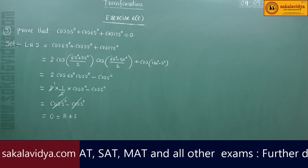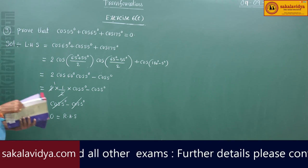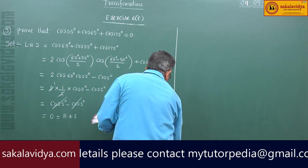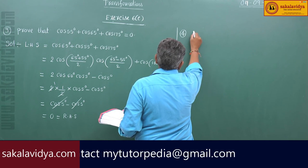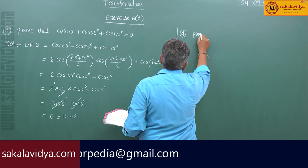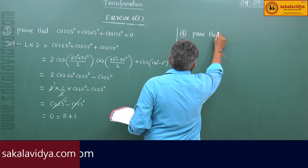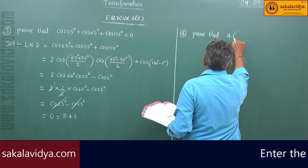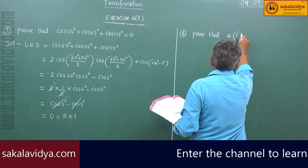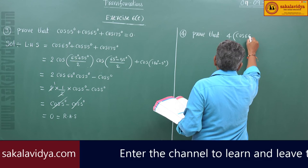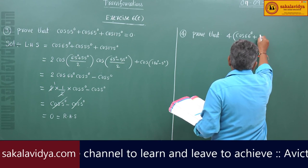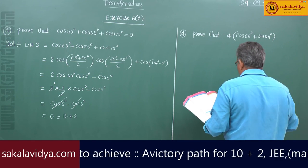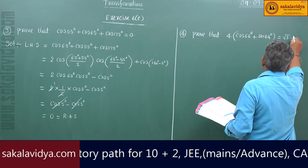Now let us go to the next problem. Fourth problem: prove that 4(cos66° + sin84°) is equal to √3 + √15.